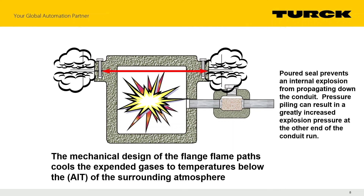There are dimensions called flame paths that give you the tolerance and minimum lengths for plain flange joints and thread specifications for threaded joints. They're quite tight to ensure that gases, even if they escape, don't have the energy to ignite the surrounding area — the flame path dimensions cool those gases and take the energy out of the ejecta.